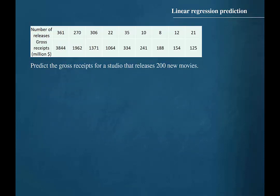The table shows the correlation between number of releases of new movies per studio and gross receipts in millions of dollars. We are to predict the gross receipts for a studio that releases 200 new movies.